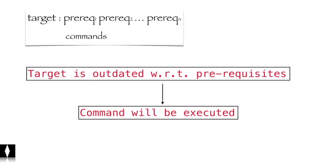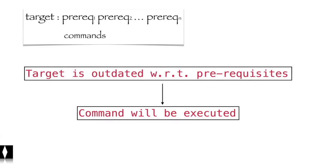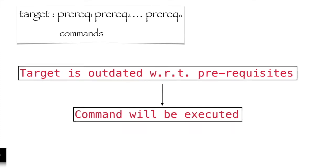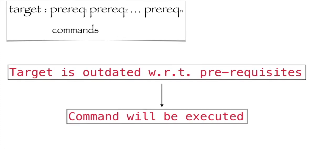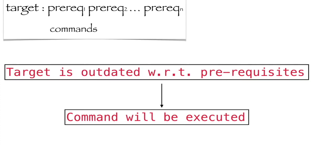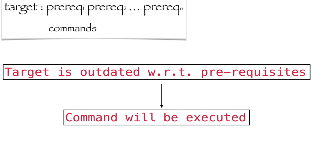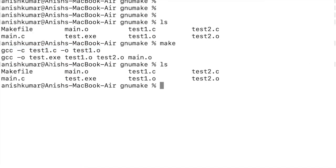This demonstrates the basic rule in a makefile: a target will only be executed when it is outdated with respect to its dependent file. If we want to delete the object files or executable at any time, we can add an rm command in the makefile.